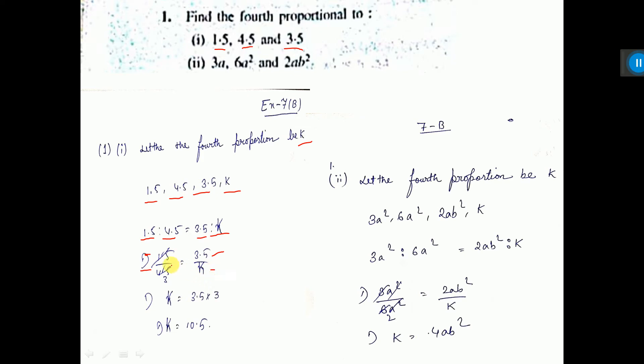Then you do cross multiplication. See, here it is cut by 3, here 1 and here 3. Now, cross multiplication, you will get the answer. Value of K, actually this is the fourth proportional. You have to write one line here. Therefore, fourth proportional is this.